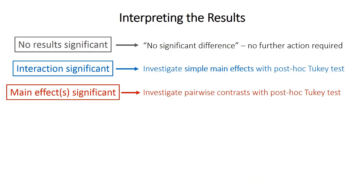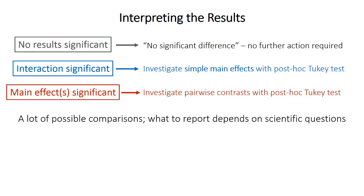If the interaction isn't significant, you can look at the regular main effects reported in the main output. You may also want to investigate pairwise contrasts using a Tukey test as you would with a regular one-way ANOVA. In factorial ANOVA there can be a lot of possible comparisons, especially when factors have more than two levels or there are three or more independent variables — so factorial ANOVA can get really complex.